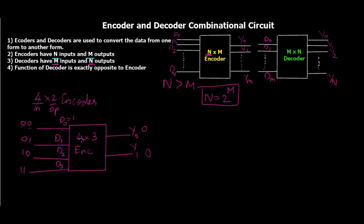When D0 is equal to 1 and all other lines are 0, the output is 00. The encoder's internal logic gates are designed so that when D0 is high, the output automatically becomes 00. Similarly, when D1 is 1 the output is 01, when D2 is 1 the output is 10, and when D3 is 1 the output is 11. We've uniquely mapped each input line to an output code, reducing four lines down to just two.